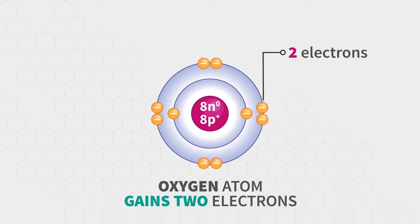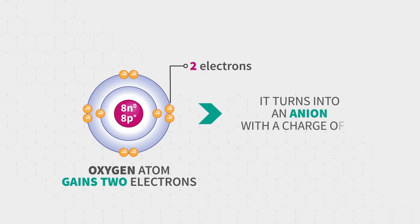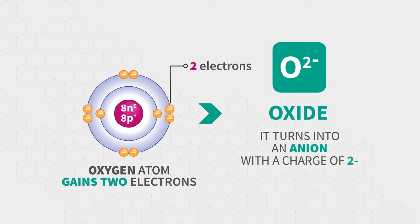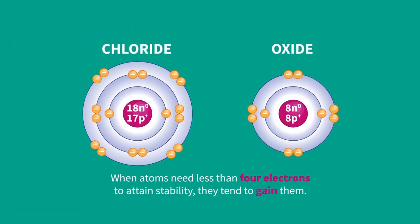When oxygen atom gains two electrons, it turns into an anion with a charge of two minus. It is called oxide and it is written as O2 minus. When atoms need less than four electrons to attain stability, they tend to gain them.